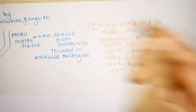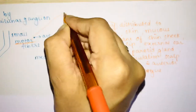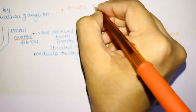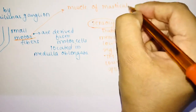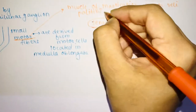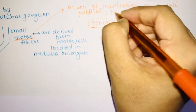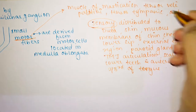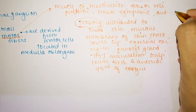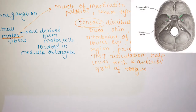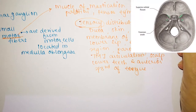The motor fiber supplies the muscles of mastication — all four muscles of mastication. It also supplies tensor veli palatini, tensor tympani, mylohyoid, and the anterior belly of digastric.